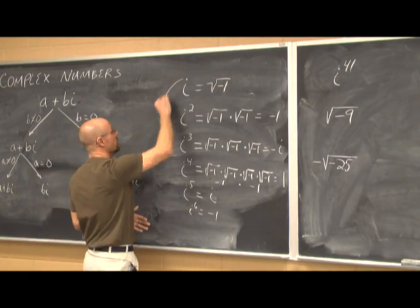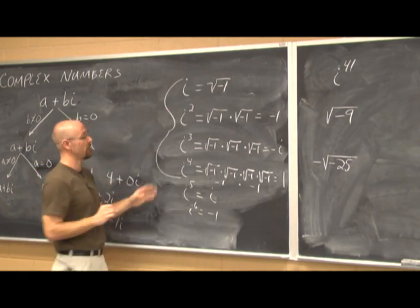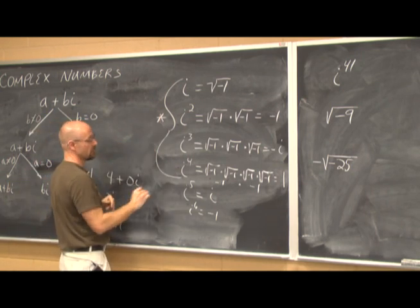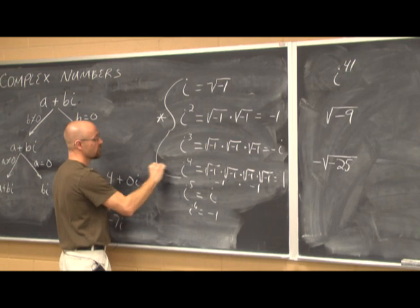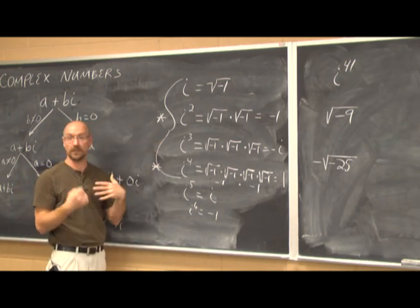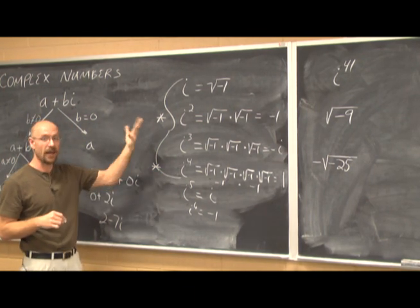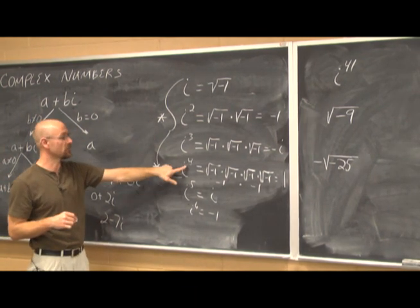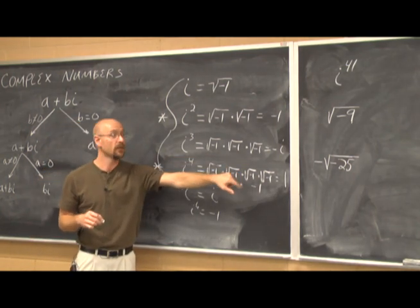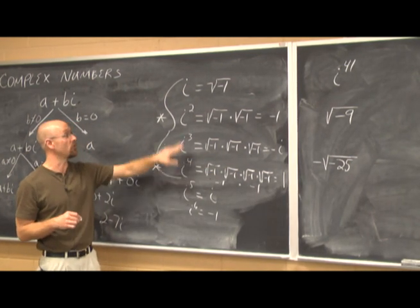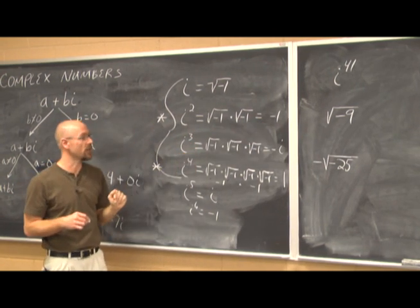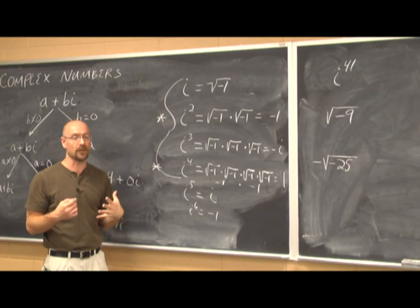All we really need to memorize is i through i to the fourth — especially i squared and i to the fourth. If i is raised to a power divisible by 4, it equals positive 1. If the power is divisible by 2 but not 4, it equals negative 1. We can apply this concept even when the exponent is odd.